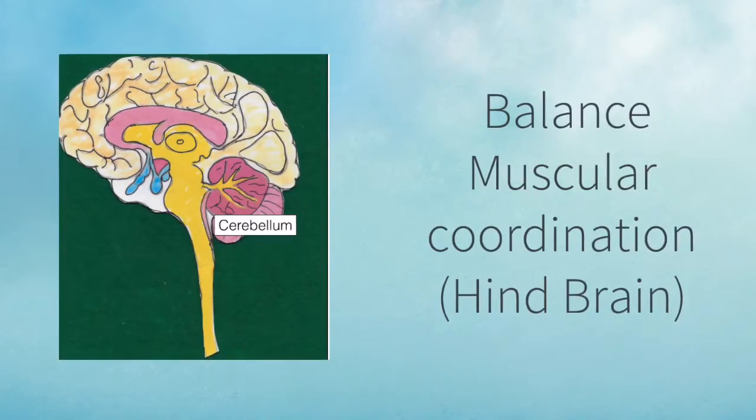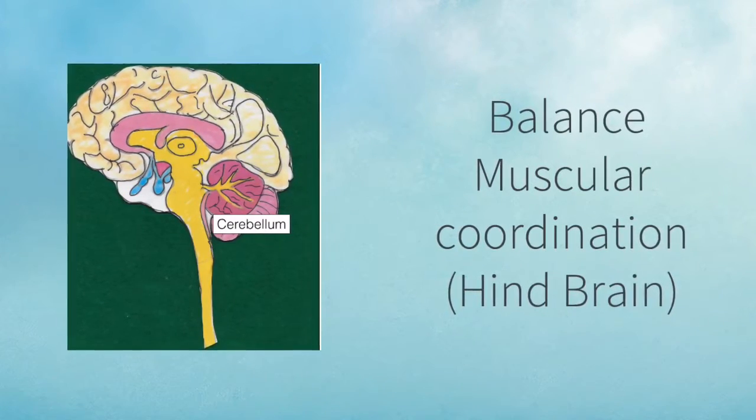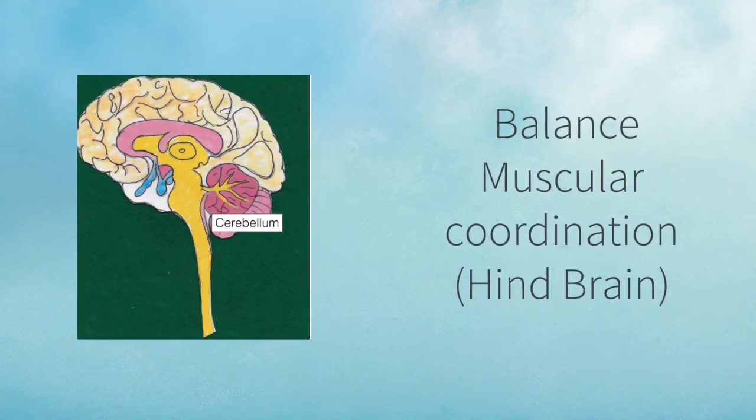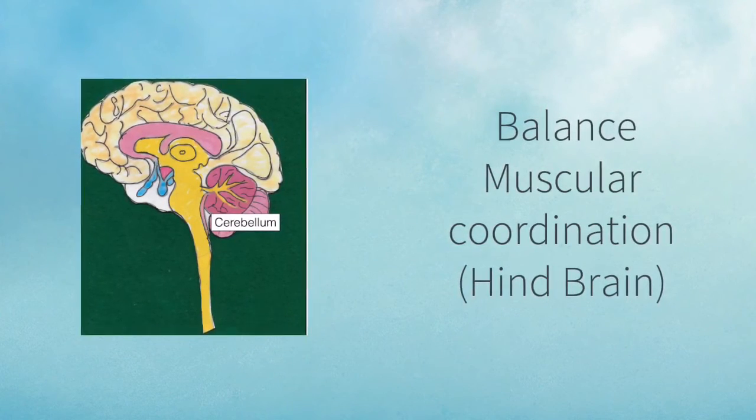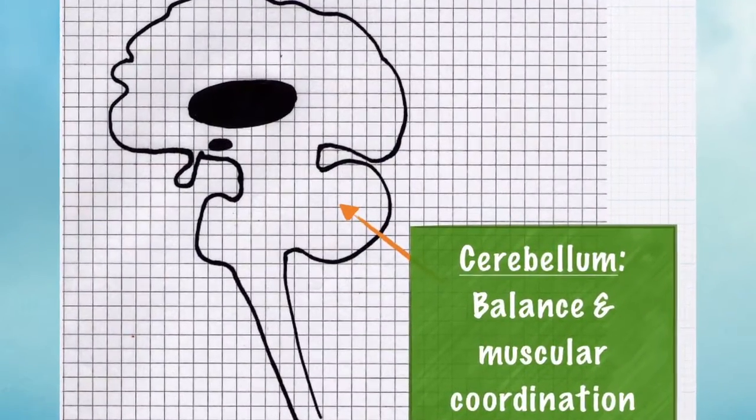Next up, it's the cerebellum at the back of the brain or the hindbrain. So whenever I say cerebellum, I always think of bellum and balance. So the cerebellum is connected to muscle coordination and balance. And here's an alternative version of a diagram you could get.